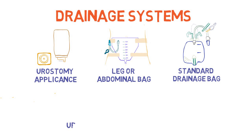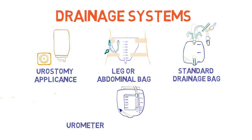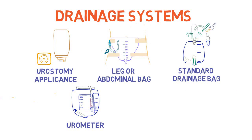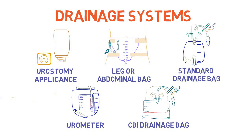The next drainage system is a urometer, which has a special plastic container allowing for accurate measurement of urine output. This is commonly used in surgical and critically ill patients. The last type is a CBI drainage bag — continuous bladder irrigation — which is a simple, large 4-liter bag with a spout on the bottom for easy emptying. In the hospital, these are typically accompanied by many bags of normal saline and a bucket, and often need to be emptied multiple times per hour. In our next video, we will discuss different methods of catheterization as well as catheter care.